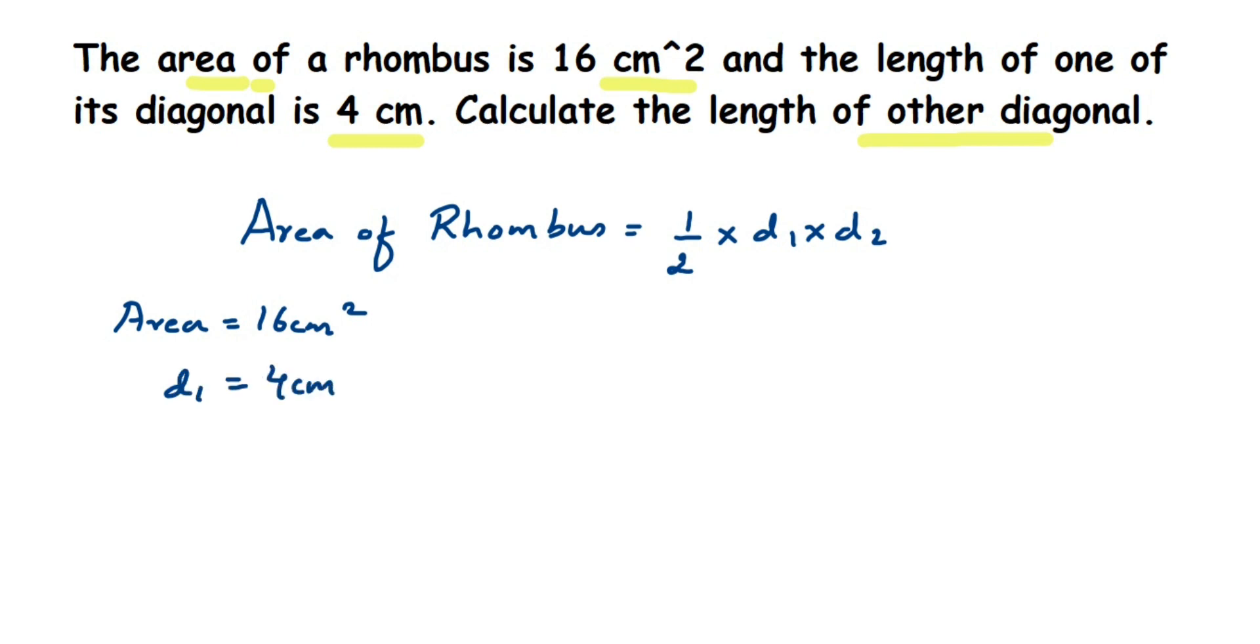And they have given one of the diagonal. Let us take d1 is equal to 4 centimeter. So we have to find out d2. We're going to substitute directly in the formula. So area of rhombus, I'm going to substitute here.